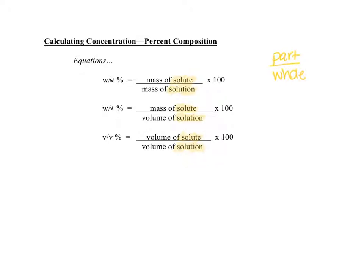The part is always the solute, which is dissolved in the solvent. The bottom is the whole, or the solution. The solution is always going to equal the solute plus the solvent. Sometimes they give you just the measurement of the solution, but sometimes they give you the two parts. If they give you the two parts, you have to add them together to get the total solution before you do the problem.